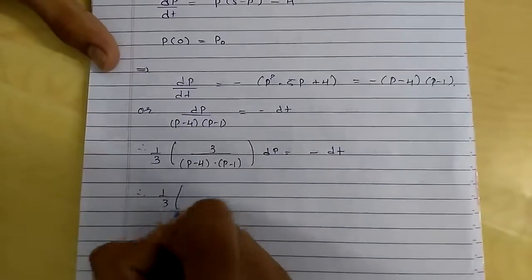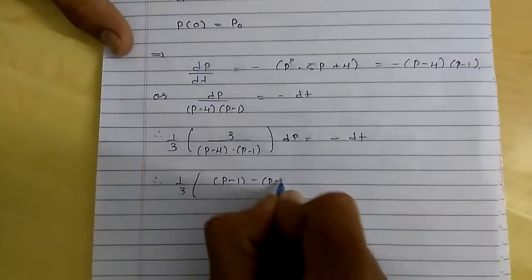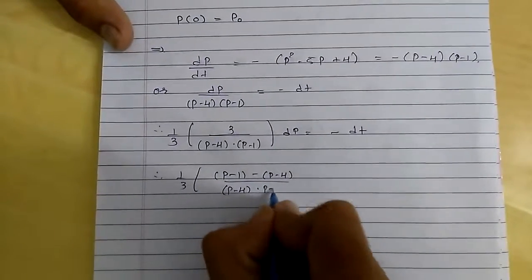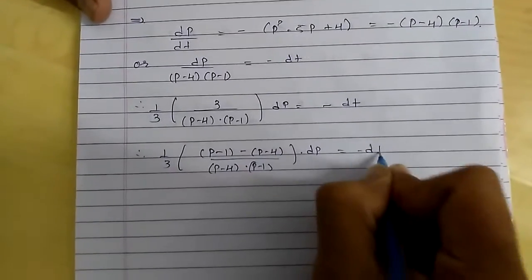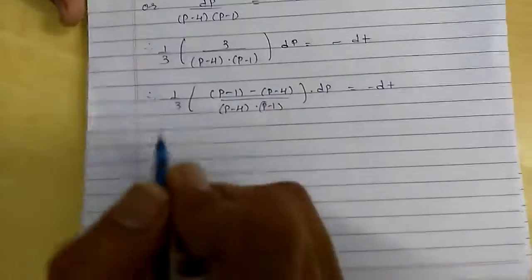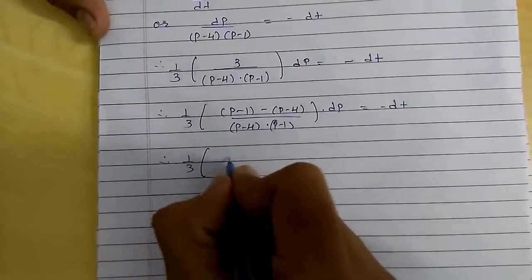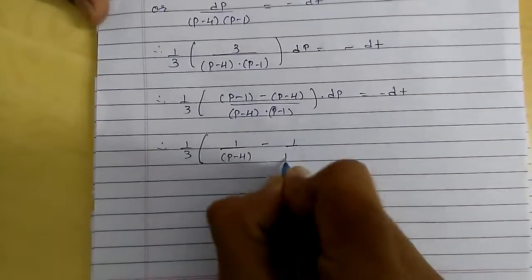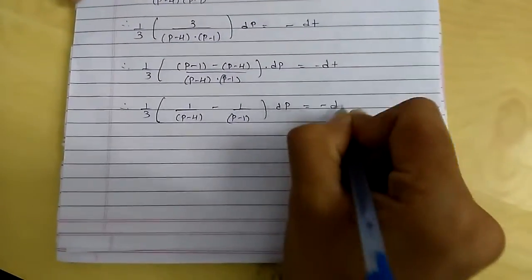So, (3/3)/((p minus 4)(p minus 1)) dp equals minus dt. So, 1/3 times ((p minus 1) minus (p minus 4))/((p minus 4)(p minus 1)) dp equals minus dt. Let's split the denominator: (1/(p minus 4) minus 1/(p minus 1)) dp equals minus dt.